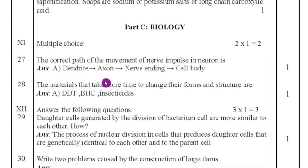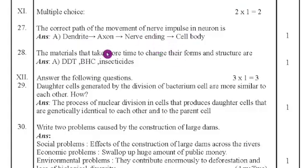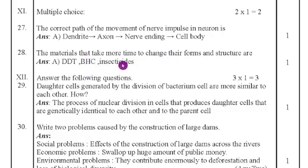Eleventh main. Twenty-seventh question: the correct path of movement of nerve impulses in a neuron is option E — dendrite, cell body, axon, and nerve ending. Twenty-eighth question: the material that takes more time to change its form and structure is DDT, BHC, and insecticides.